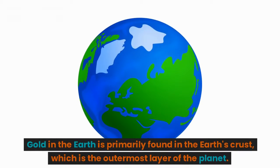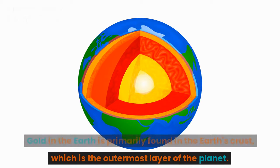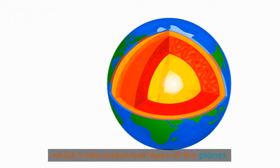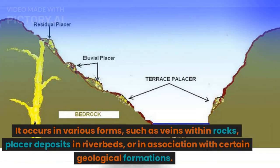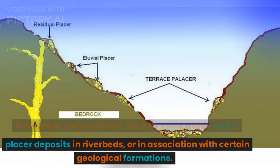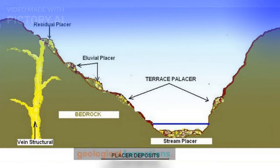Gold in the Earth is primarily found in the Earth's crust, which is the outermost layer of the planet. It occurs in various forms, such as veins within rocks, placer deposits in riverbeds, or in association with certain geological formations.